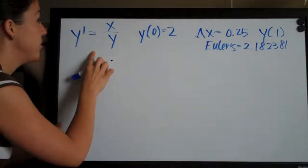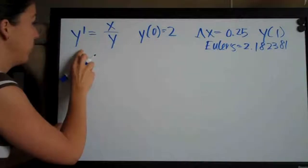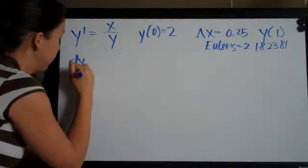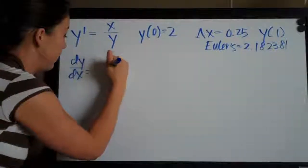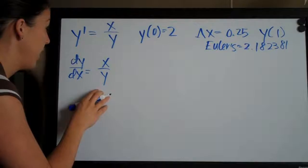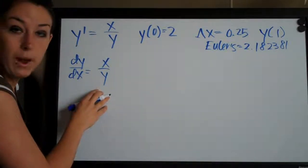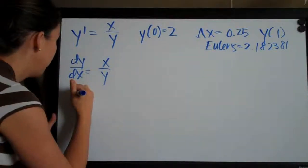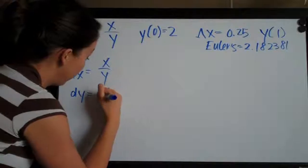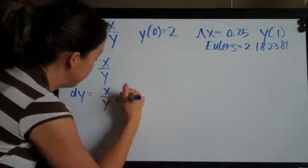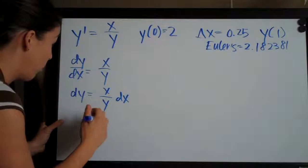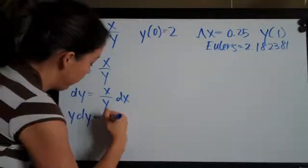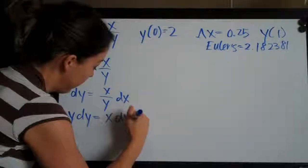First of all, we'll convert y prime here to dy over dx, which is the same thing and we get x over y. And just as in differential equations problems, what we need to do is first separate the variables. So we'll multiply both sides by dx and get dy equals x over y times dx. Then we'll multiply both sides by y, which will move the y over to the left side and we'll be left with y dy equals x dx.